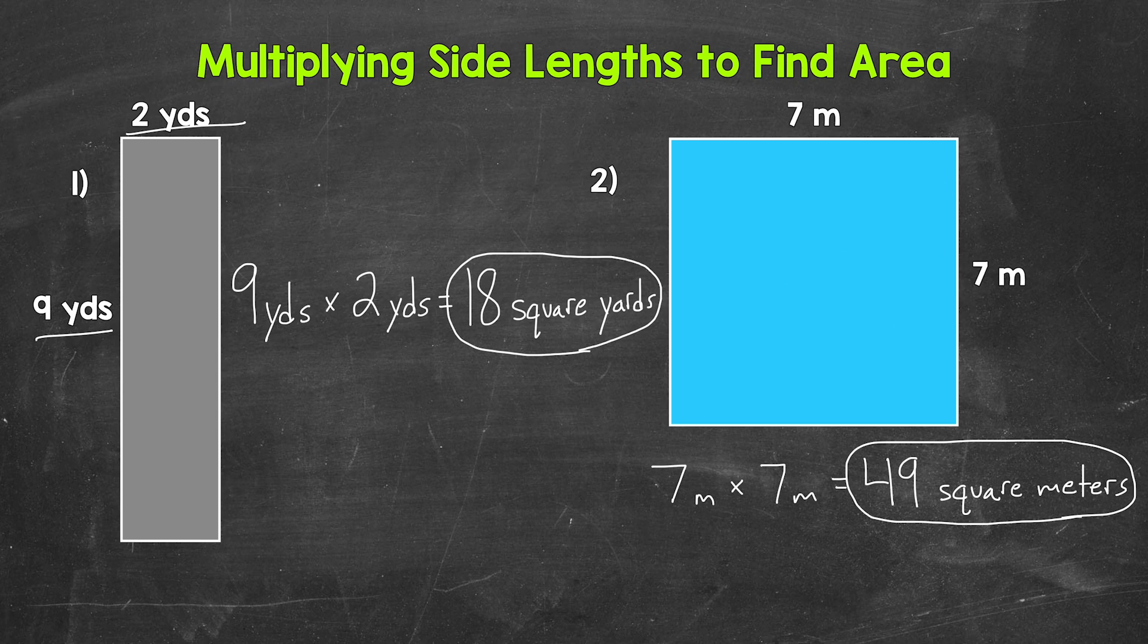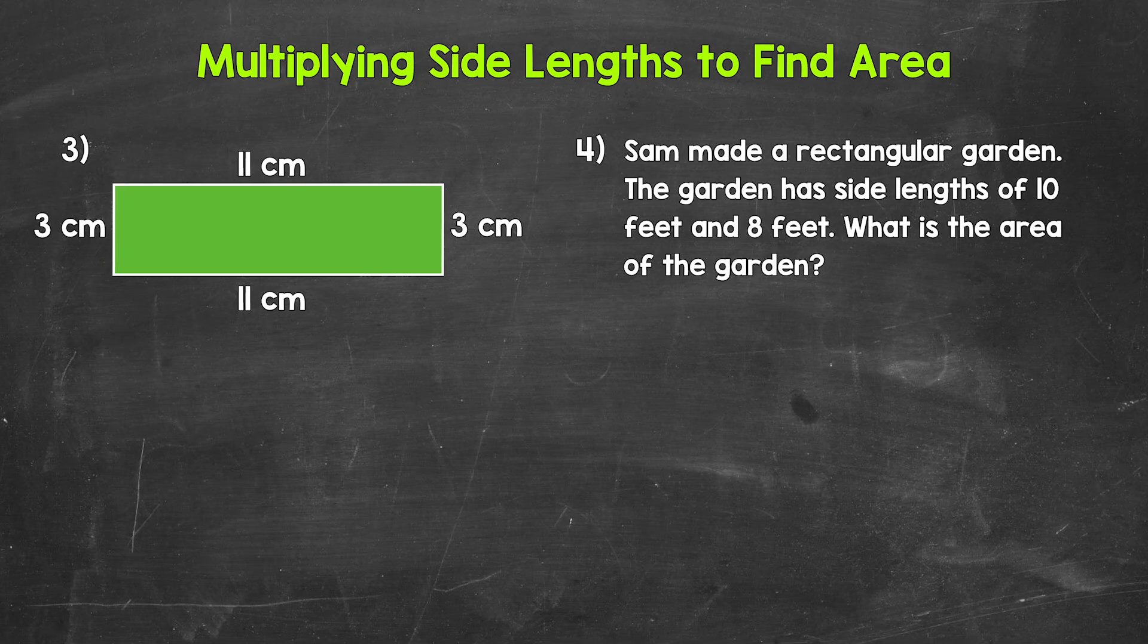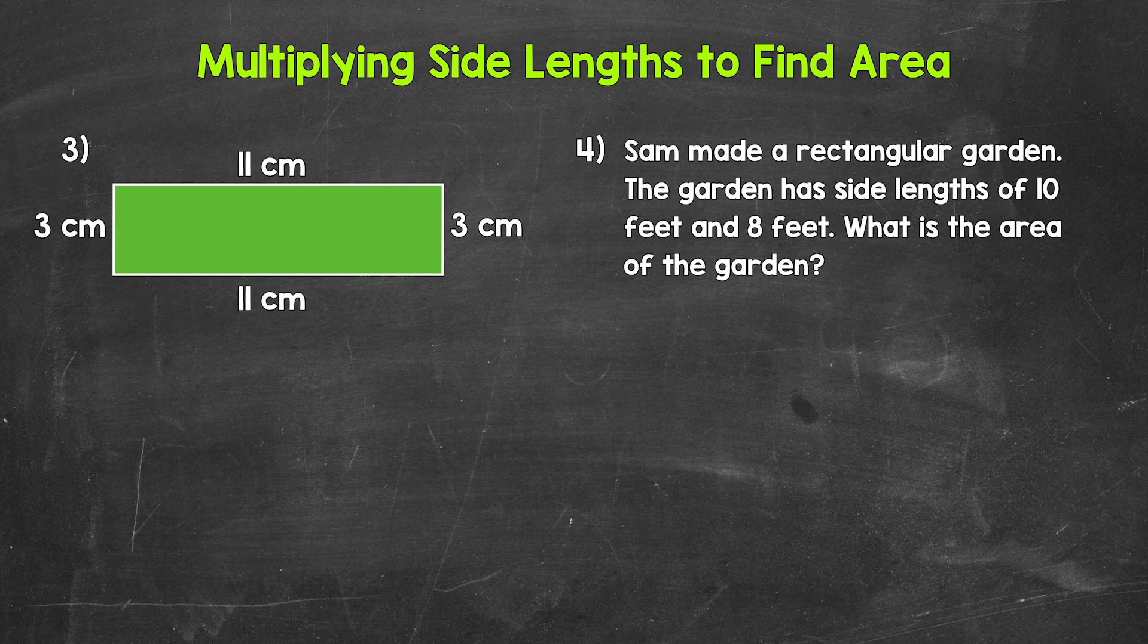Let's move on to two more examples and take a look at numbers three and four. Taking a look at numbers three and four here. Let's start with number three, where we have a rectangle with side lengths of three centimeters and 11 centimeters. Now notice all four sides are labeled. So three centimeters, three centimeters, 11 centimeters, 11 centimeters. This does not mean to multiply all four numbers, all four side lengths. We don't want to do three times three times 11 times 11. That will not give us the correct area.